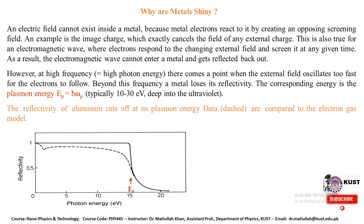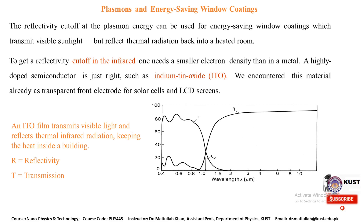The reflectivity of aluminium cuts off at its plasma energy, as shown in the curve comparing reflectivity to the electron gas model. The reflectivity curve is plotted between reflectance and photon energy, and we can see a particular cutoff of reflectivity at a particular energy — in this case, at 15 electron volts for aluminium.